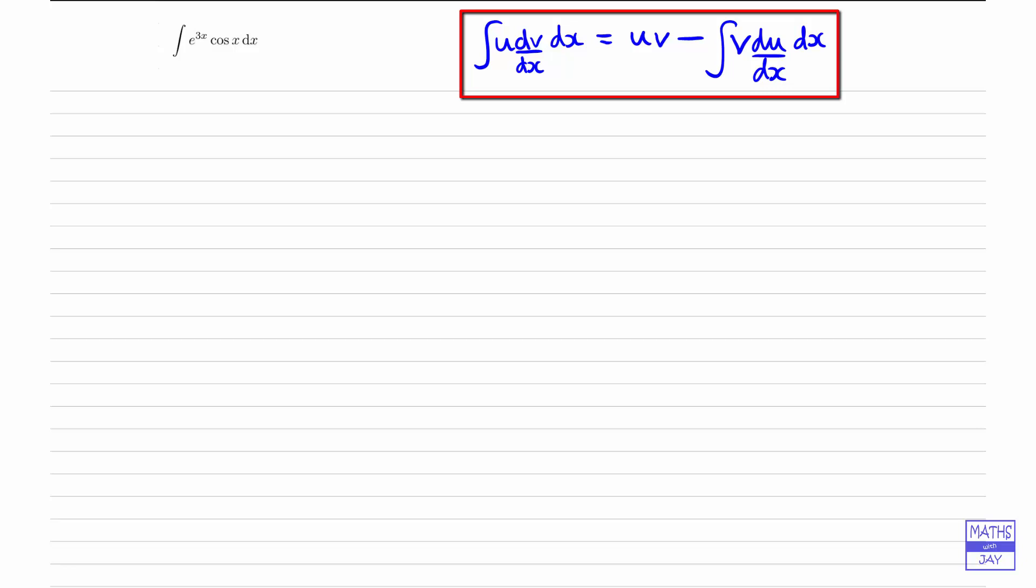So what we'll do is we'll start off by writing down u1 and dv1 by dx. If you only need to apply the method once, you'd only need to write down u and dv by dx. But because we want to do it twice, we're going to be using subscript, so it'll be clearer when we get on to the next one. So we can choose to take u1 as either e to the 3x or cosx.